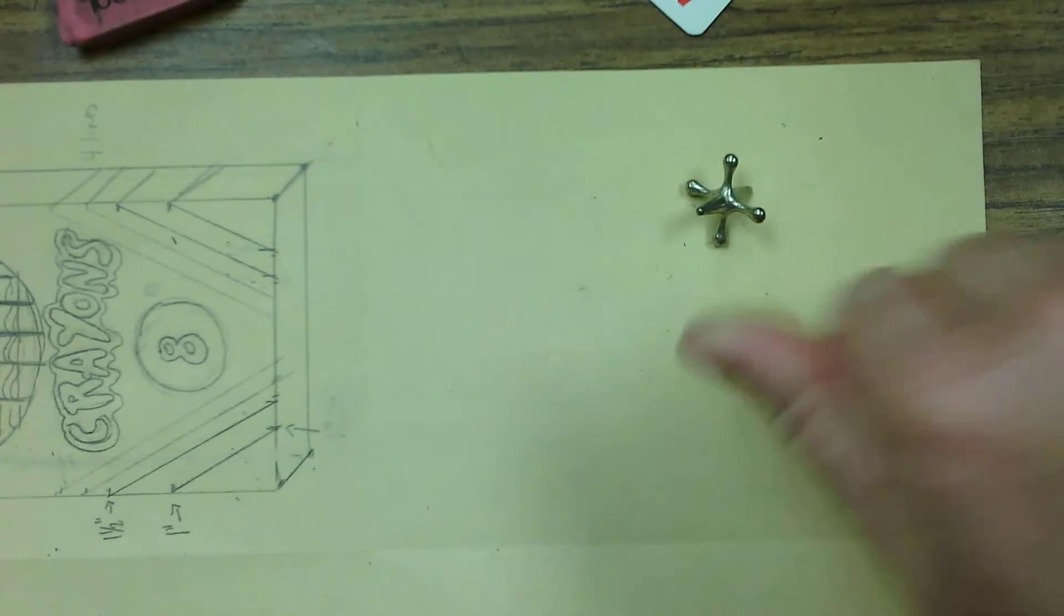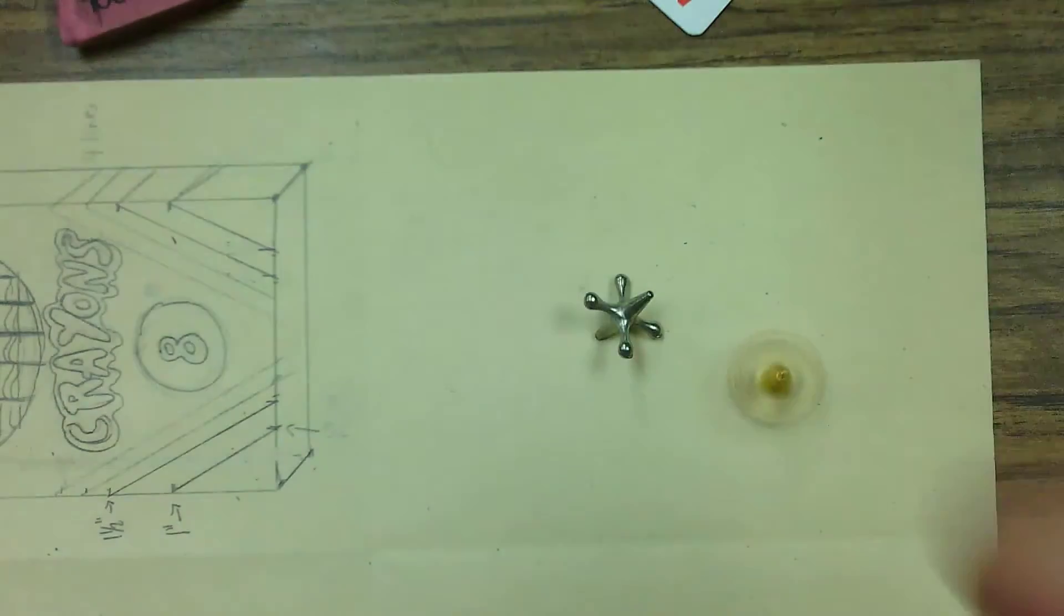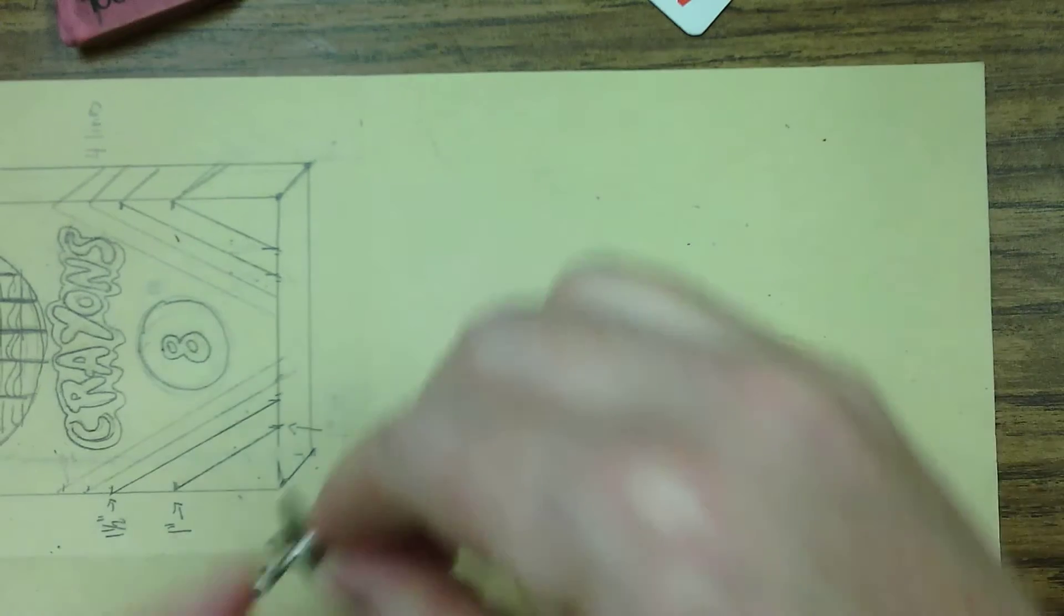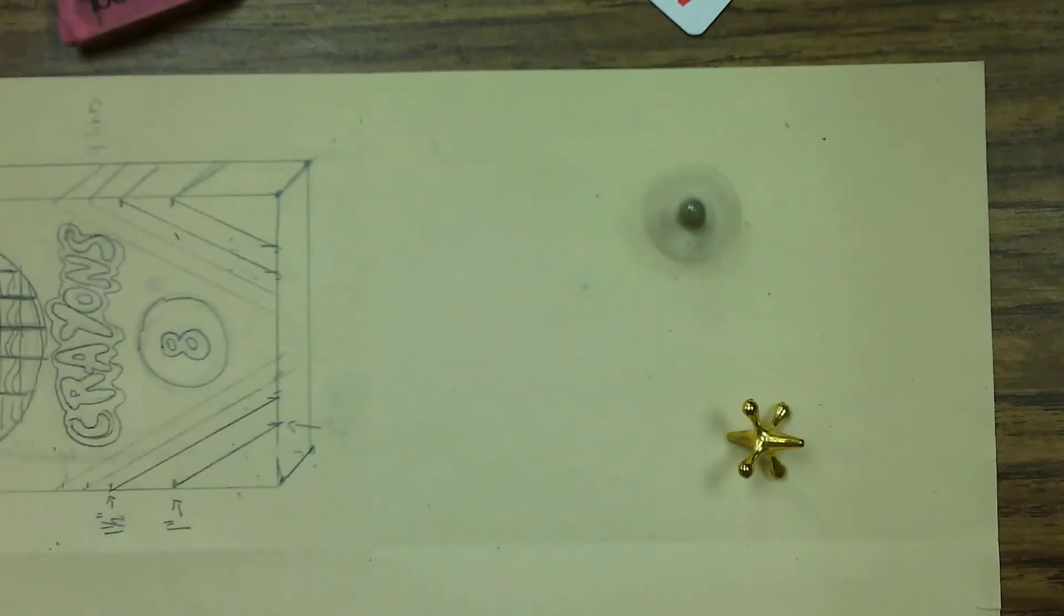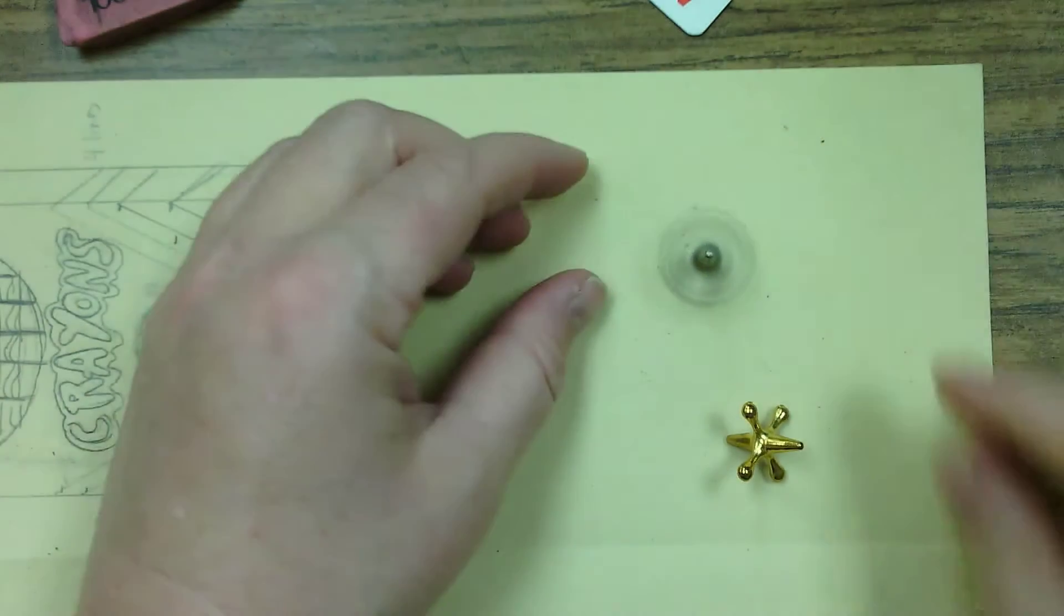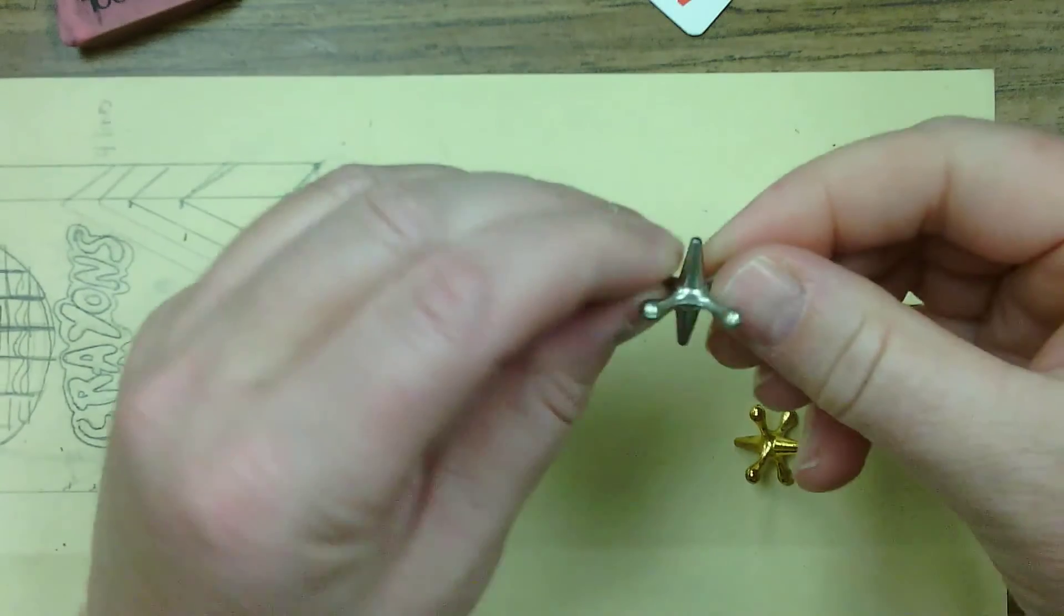To draw a jack is relatively simple. It looks complicated, but it really isn't. It's basically just like an X with a column kind of going through it.